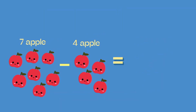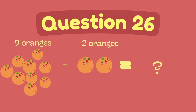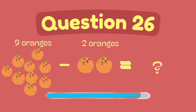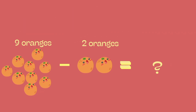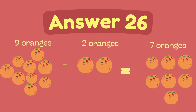What is 9 minus 2? What is 8 minus 2? The answer is 7.